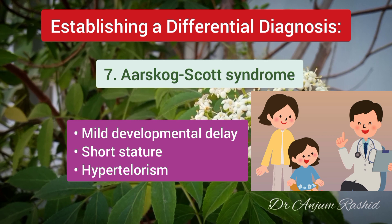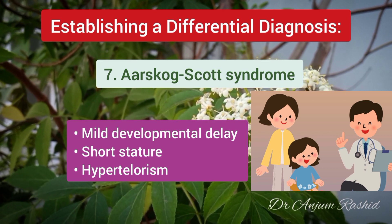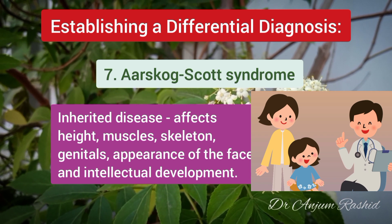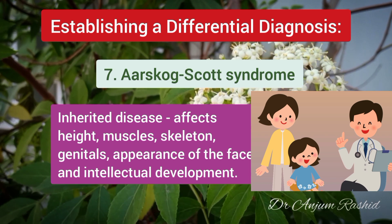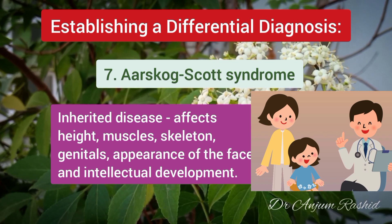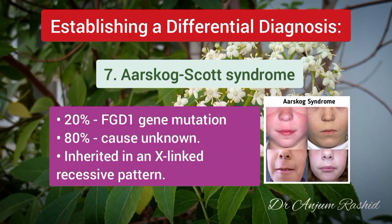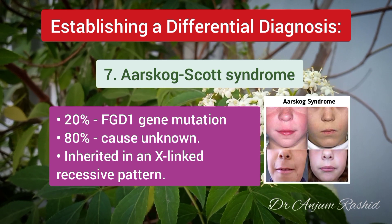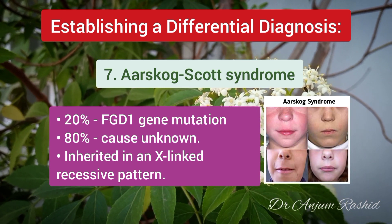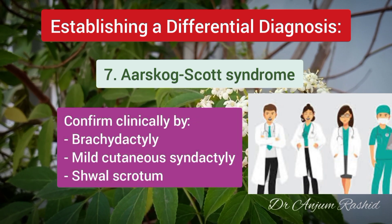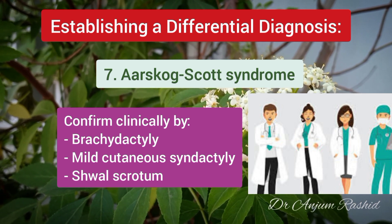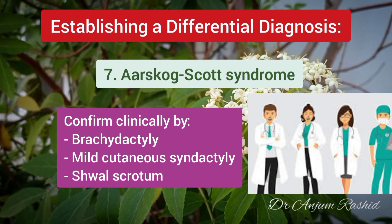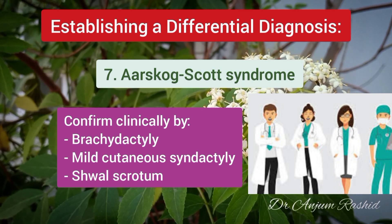In cases of mild developmental delay, especially if associated with short stature, the hypertelorism may be associated with Aarskog syndrome. Aarskog syndrome is an inherited disease that affects a person's height, muscles, skeleton, genitals, and facial appearance. About 20% of people with Aarskog syndrome have genetic changes in the FGD1 gene; the cause in other affected individuals is unknown. It is inherited in an X-linked recessive pattern. Aarskog syndrome is confirmed clinically by observing the digits for brachydactyly — short fingers — associated with mild cutaneous syndactyly, that is webbing of the skin between the fingers. In these patients, the scrotum will generally have a shawl configuration.